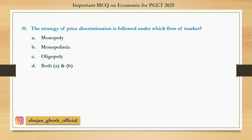Question number thirty-one: The strategy of price discrimination is followed under which form of market? Option A: monopoly; B: monopolistic competition; C: oligopoly; D: both A and B. Answer: monopolistic competition.